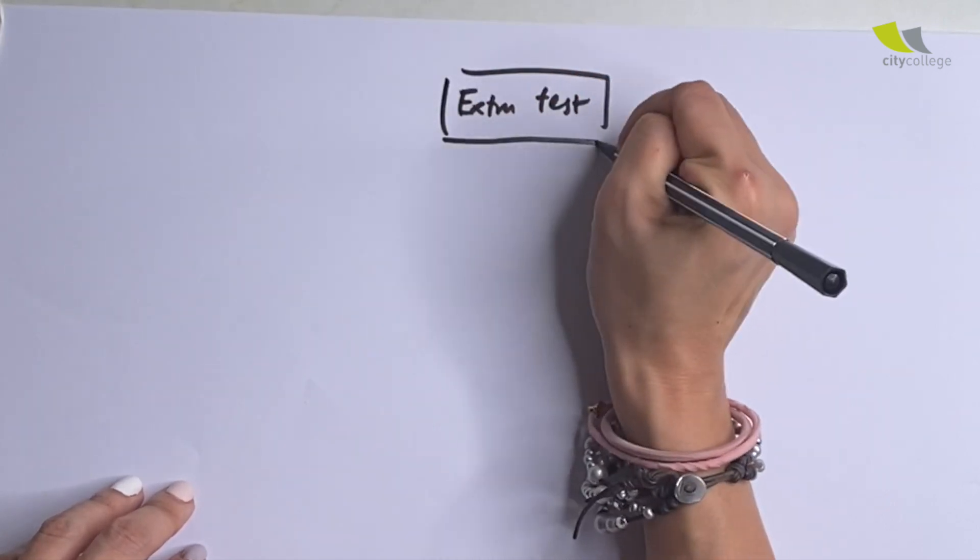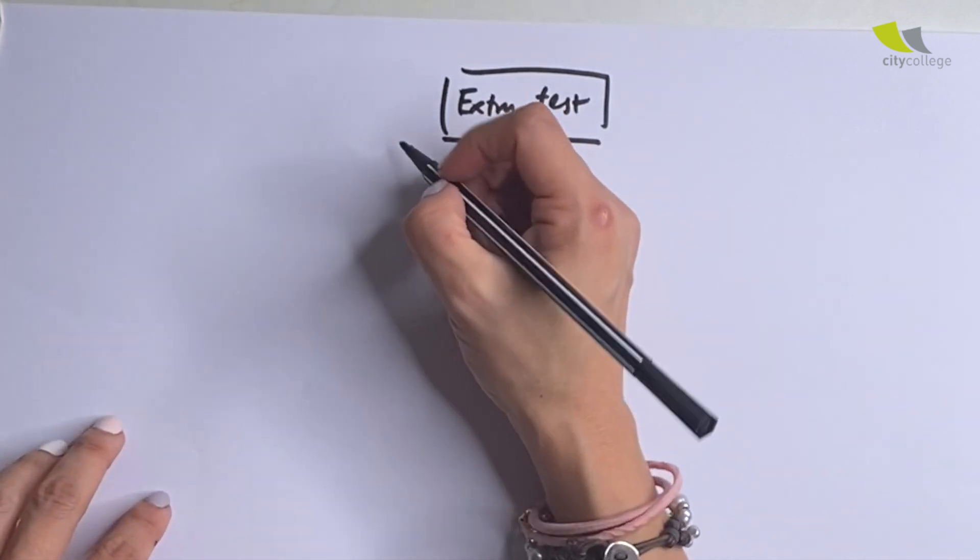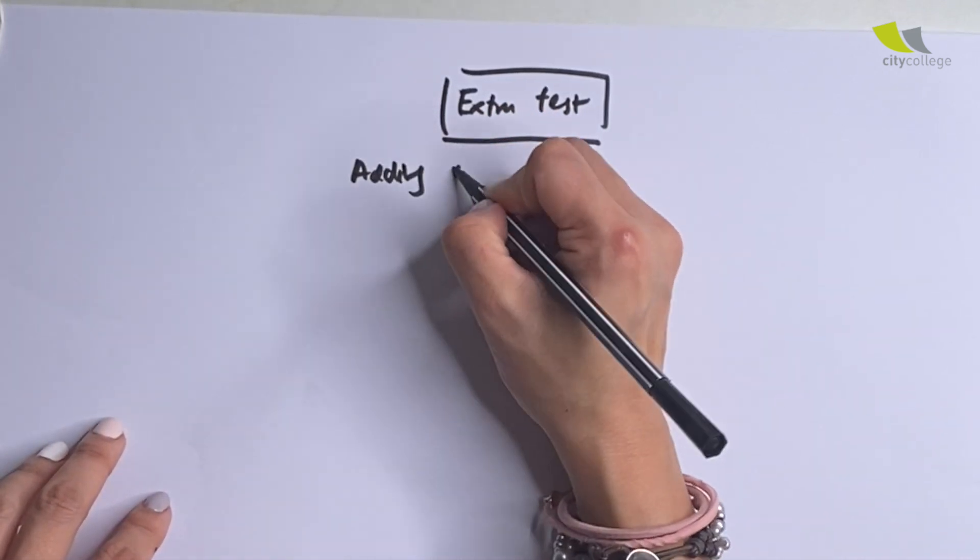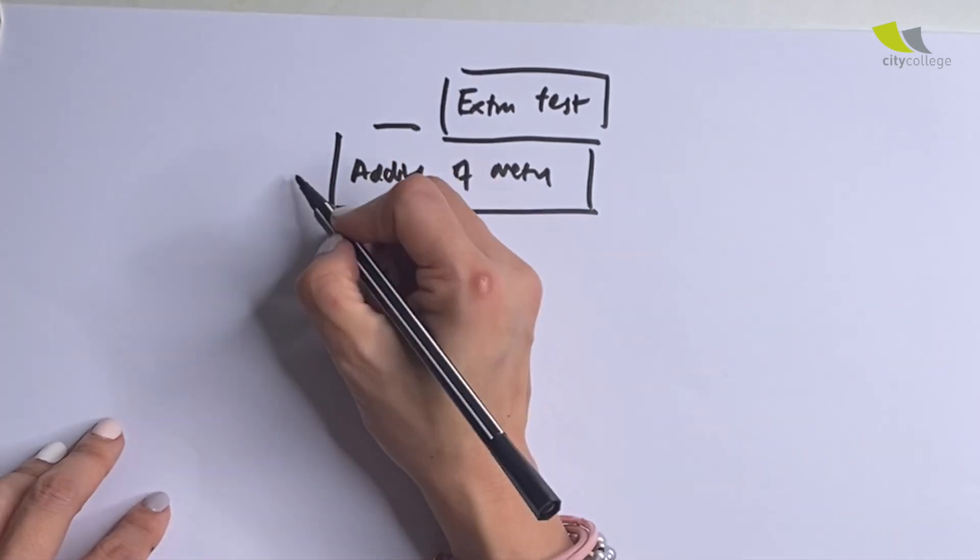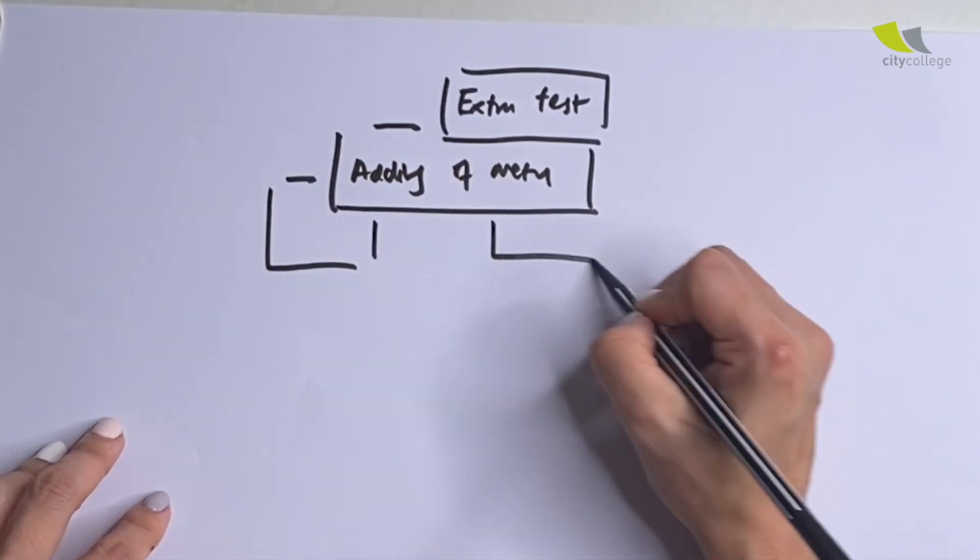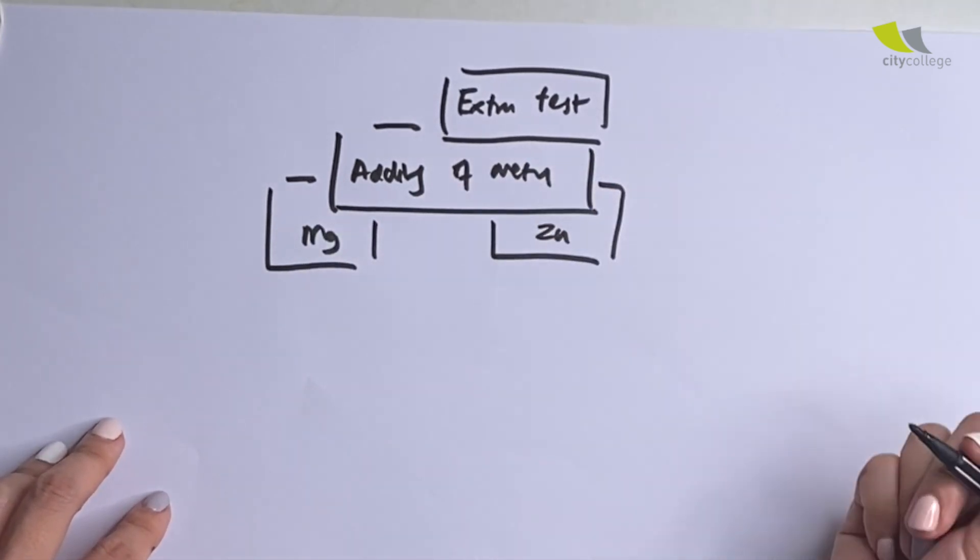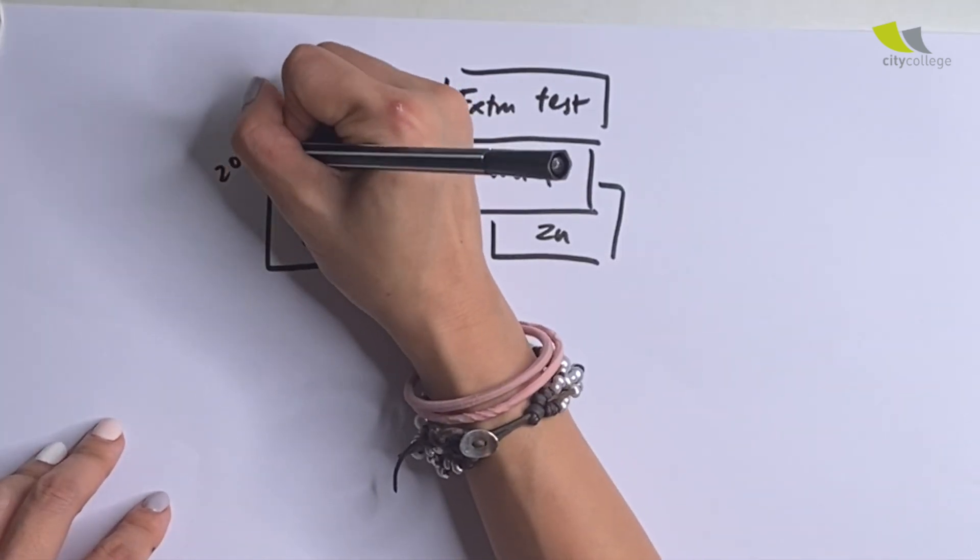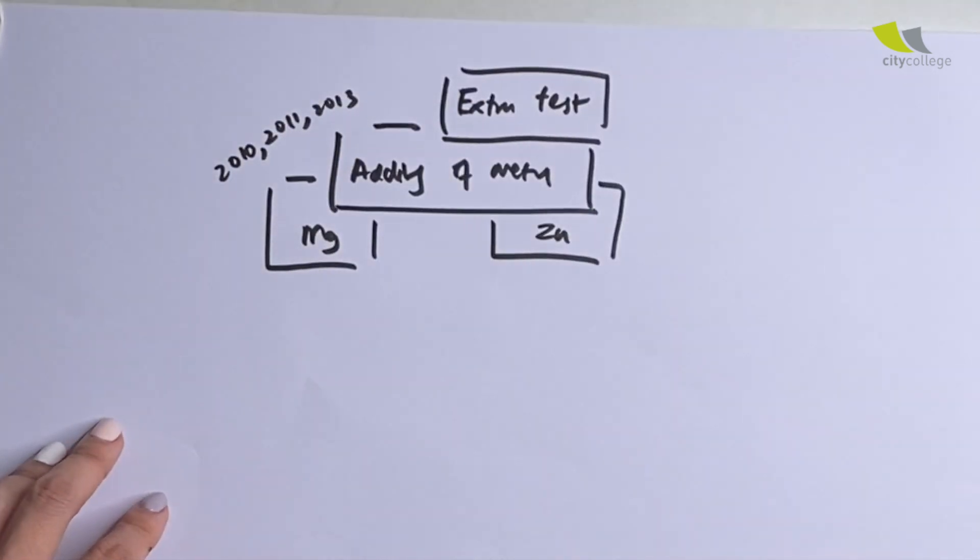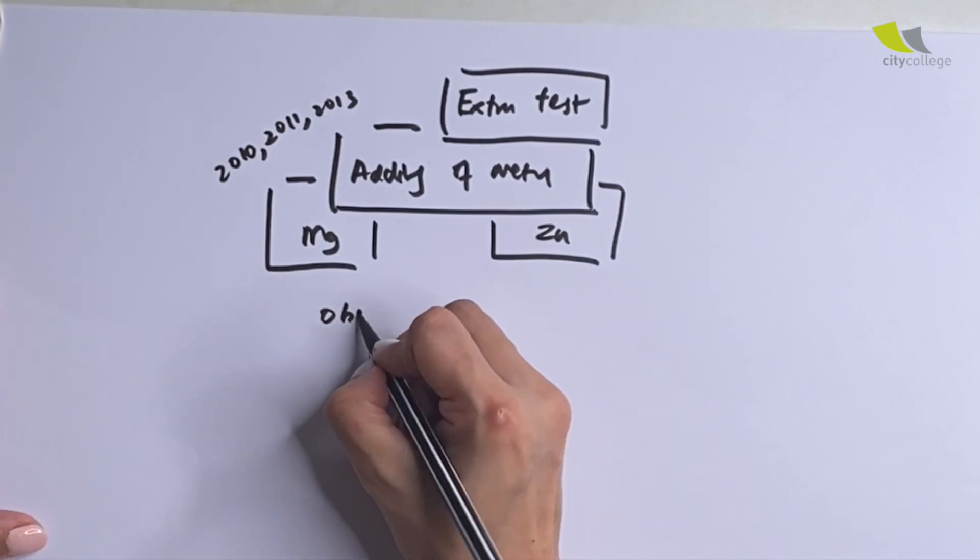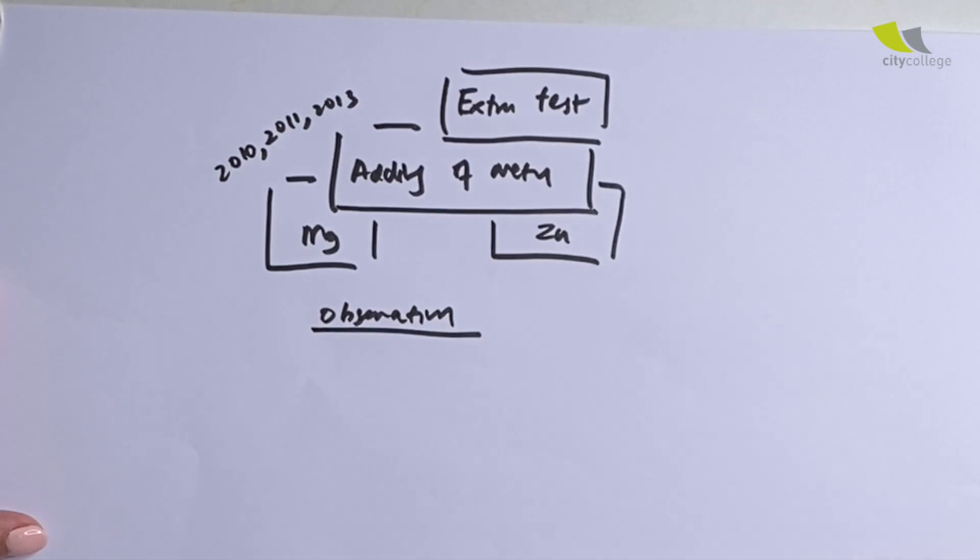And among all the extra tests, one of which I think is worthy to run through with all of you is this portion called adding of metal. And usually two kinds of metals will be given, either they add magnesium or zinc. And it actually happened in 2010, 2011, and even 2013. Now, of course, for everything that we add, one of the most important thing we look for are the observation.